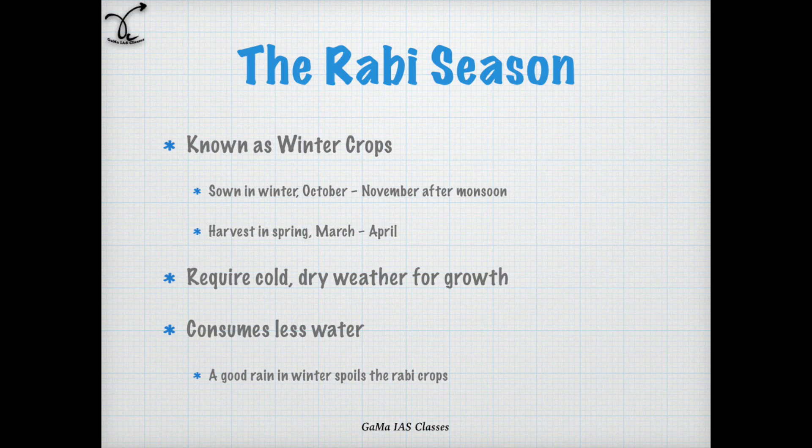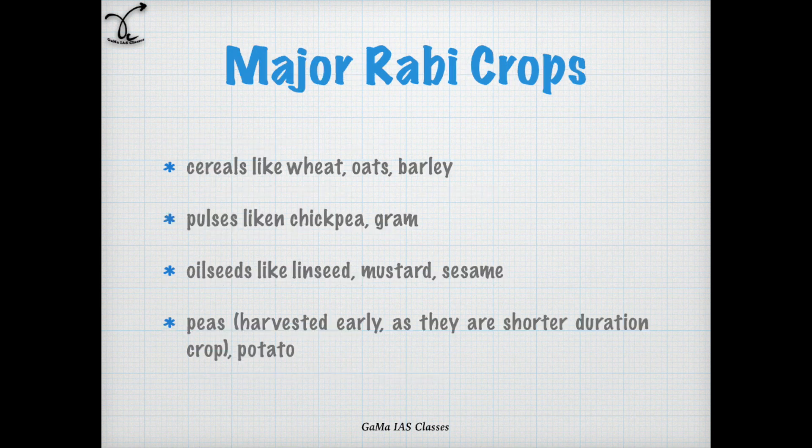The crops of Rabi season are also known as winter crops. They are sown in winter in October-November after the monsoon and harvested in spring in March-April. They require cold, dry weather for growth. They consume less water and a good rain in winter spoils the Rabi crops.